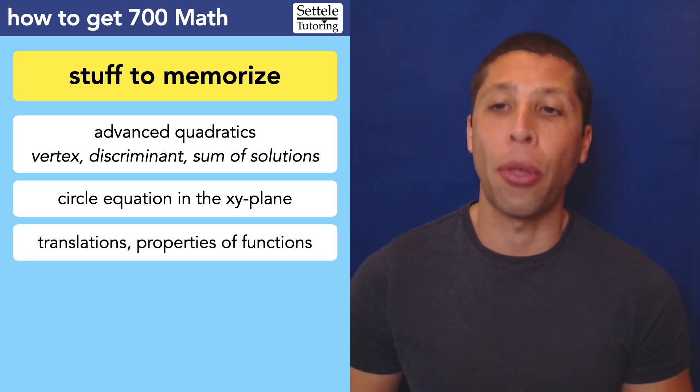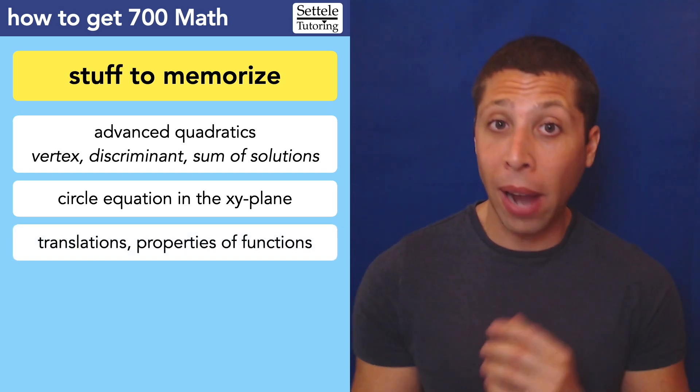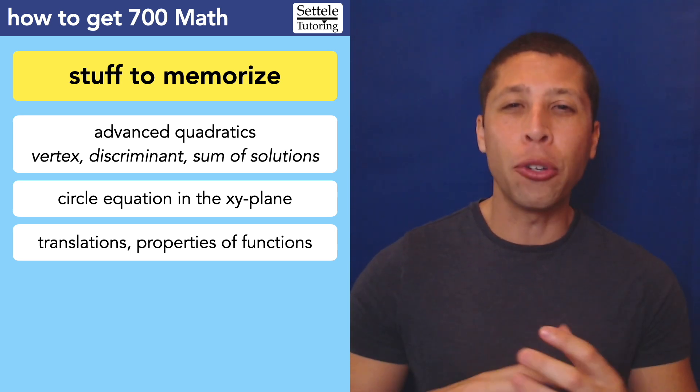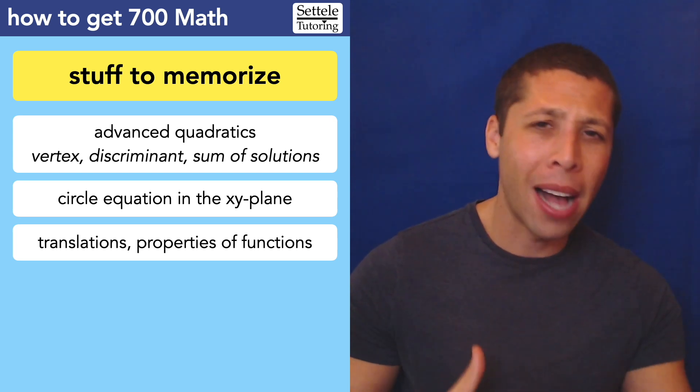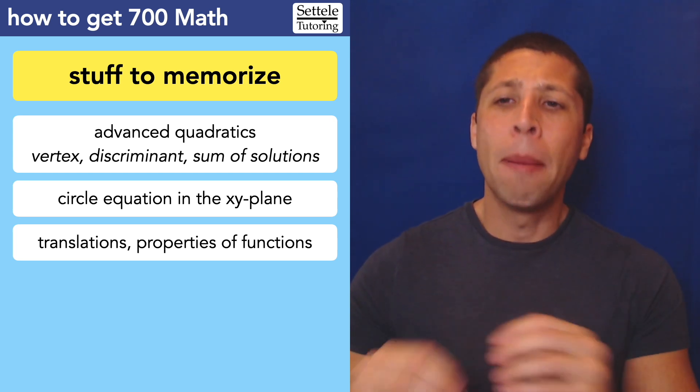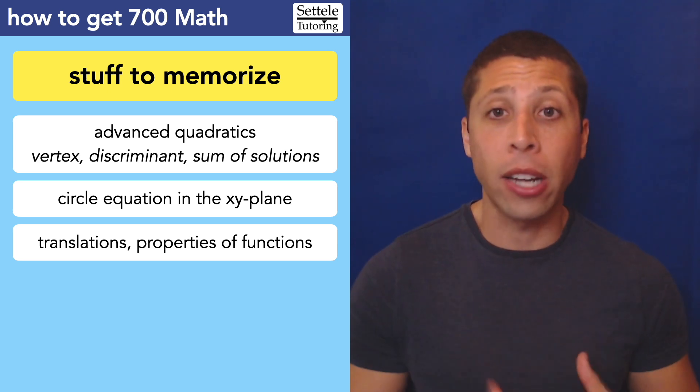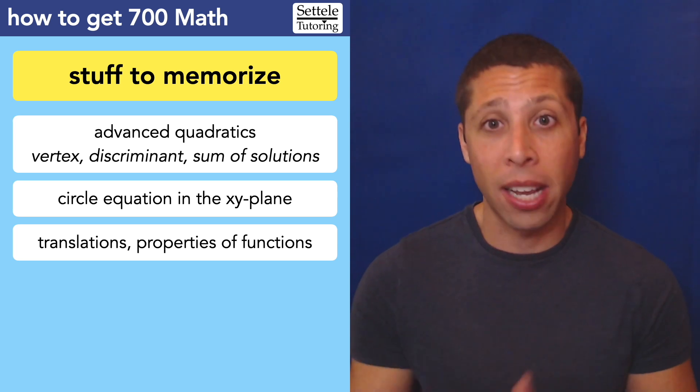Now, a slightly more conceptual thing, we need to understand how translations work, how functions can move around the XY plane. We need to be able to work with functions and think about when they can be negative or positive or equal to zero. So that's harder to quantify, but you just need to be comfortable with the way that equations behave. So that comes from just normal practice. As you do practice tests, you will see a lot of questions about this, so get comfortable with those.